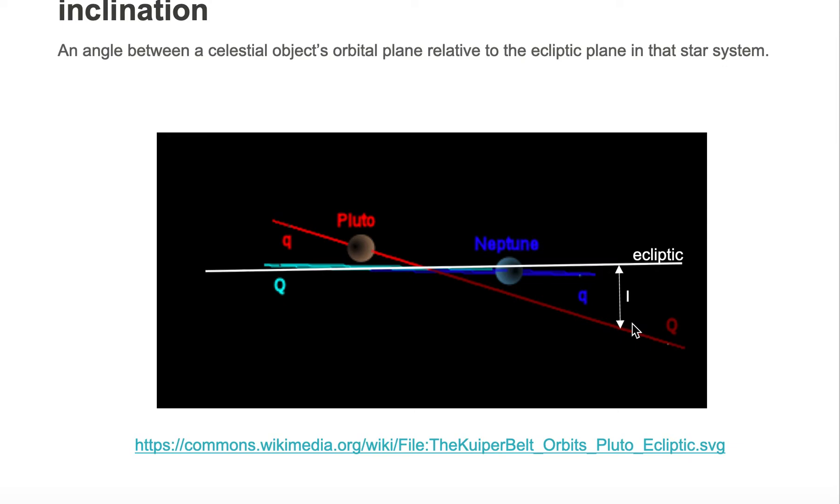The inclination angle is the orbit of the object you're looking at, which is in this case Pluto, relative to the plane of the ecliptic in that solar system or star system.